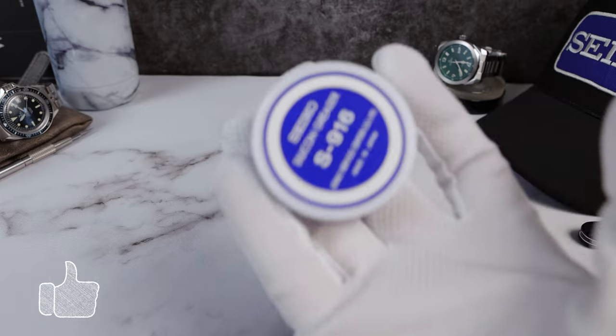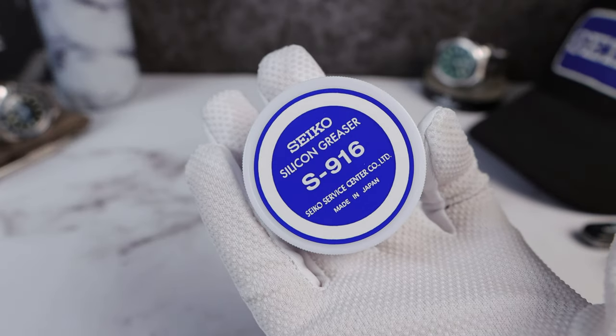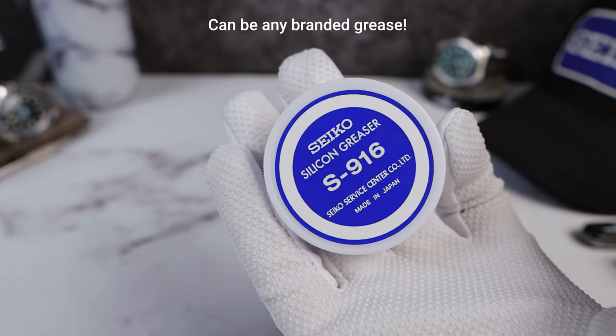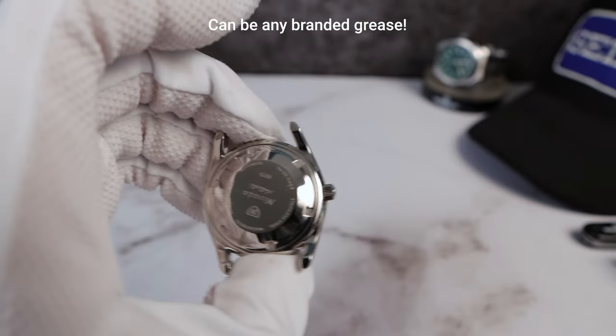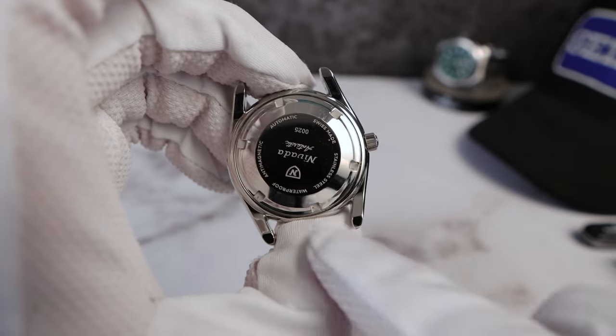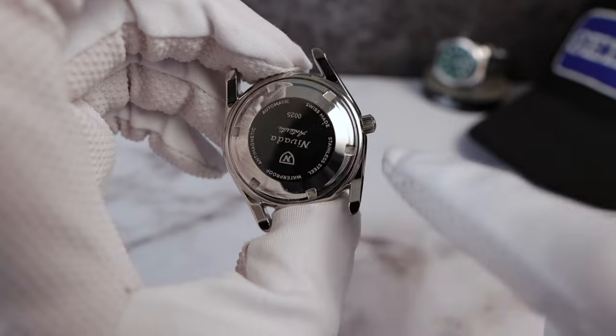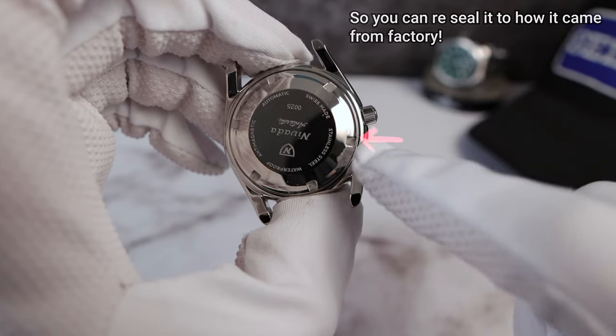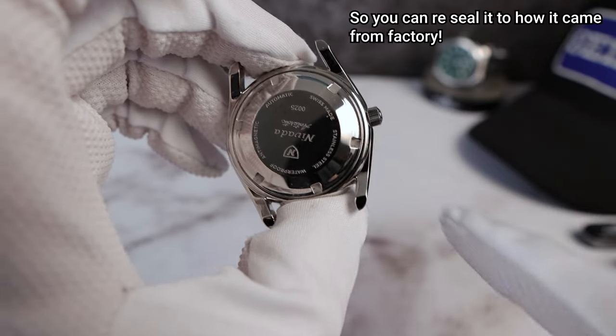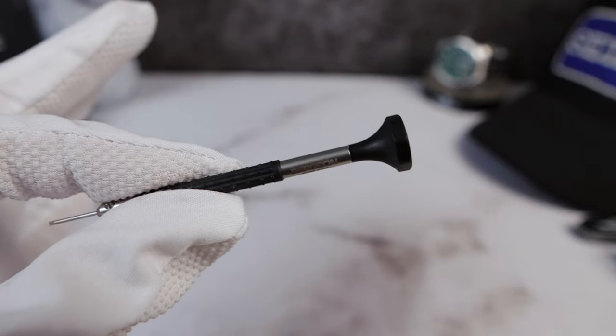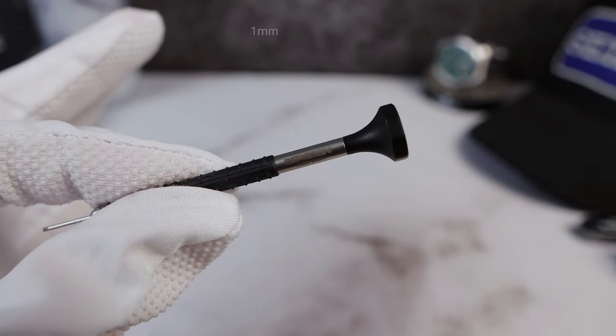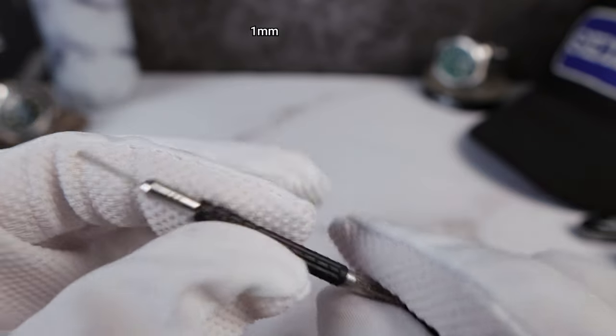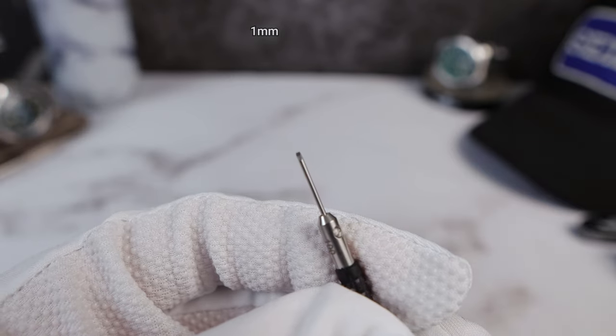You're also going to want your Seiko silicone grease to re-grease that gasket when you close the case back. Maybe do a mental check to remember how it was tightened down from factory. So maybe put a little piece of tape there. This notch was near the crown right here. You're also going to need your Bergeon flathead, links to these as well. I think the one millimeter works good. Just remember to keep good downwards pressure.